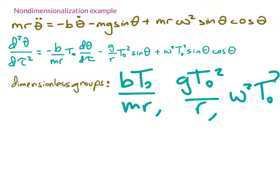I have one arbitrary constant that I have control over, that's T₀. And so I get to choose T₀ so that one of these groups disappears and becomes one. There's a few different choices we could make there, specifically three.